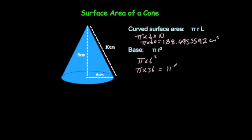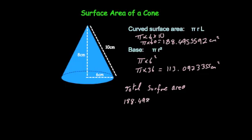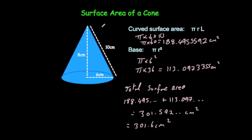So the total surface area is equal to the sum of those two: 188.495 and so on plus 113.097 and so on. Whenever you add those two together you get a total of 301.592 and so on centimeters squared. Let's round that to one decimal place: that's going to be 301.6 centimeters squared, and that's the surface area for this cone.